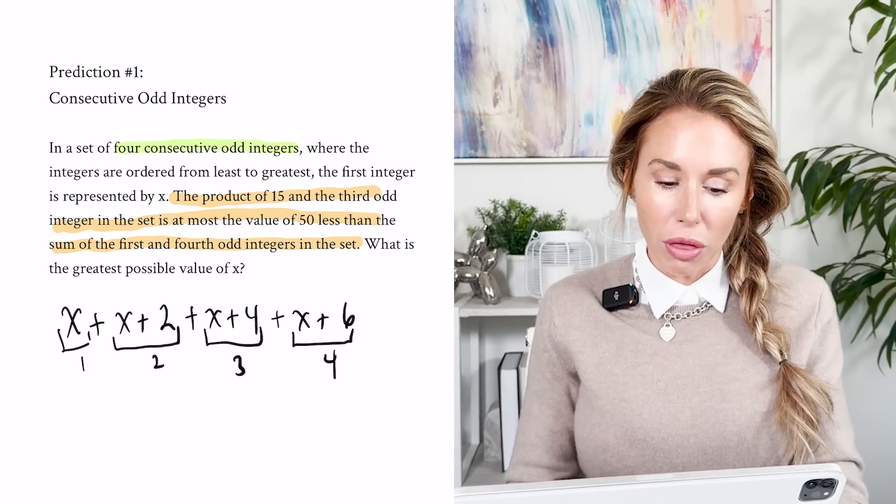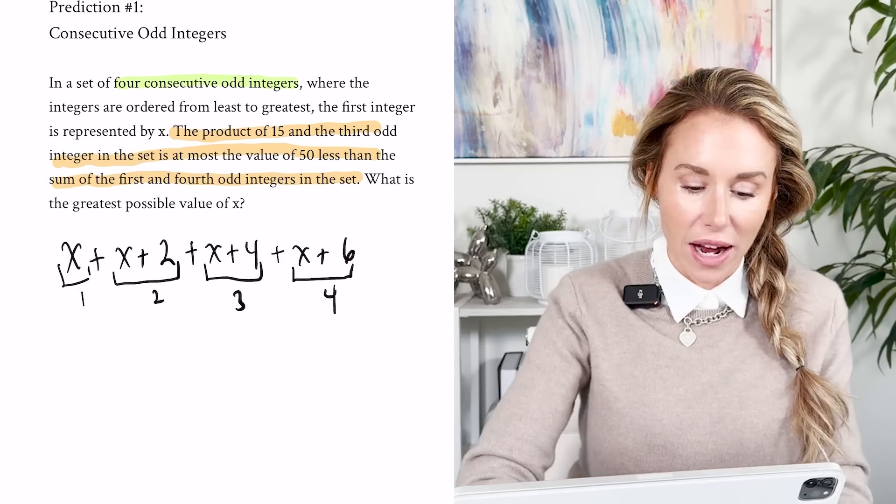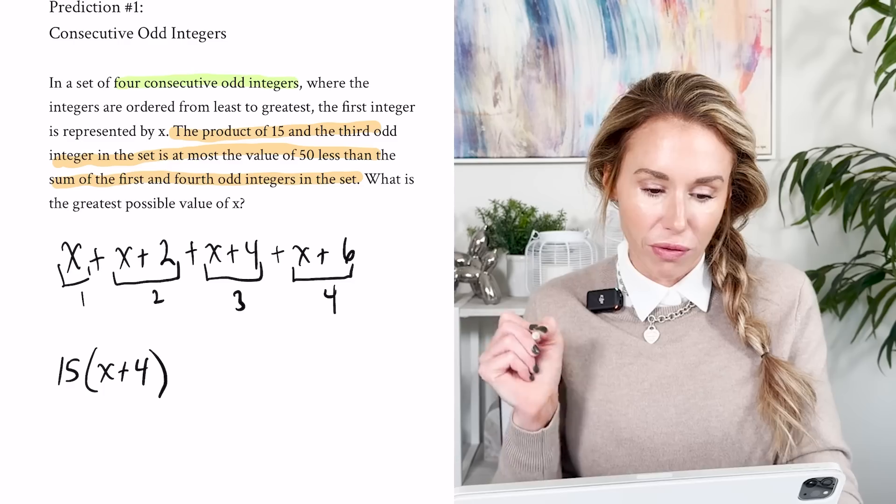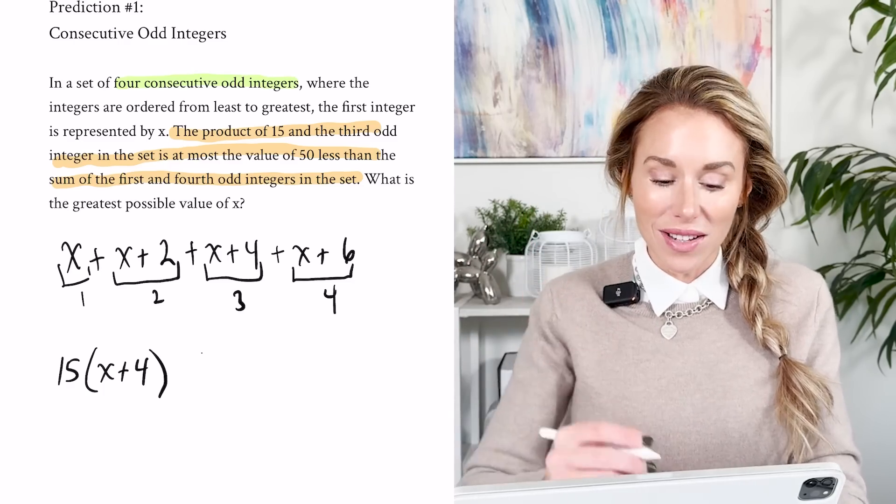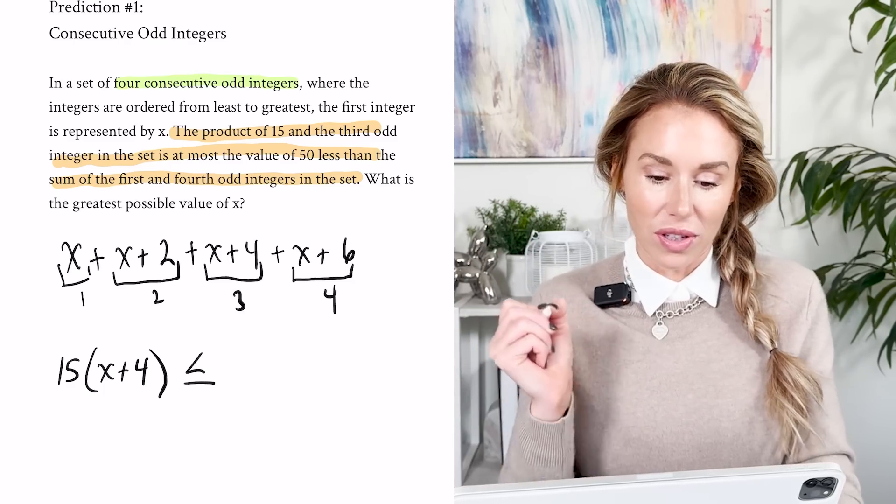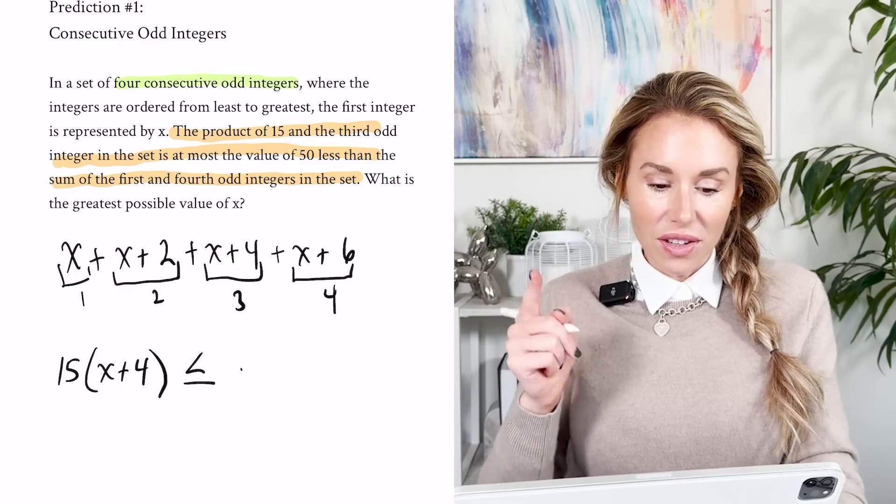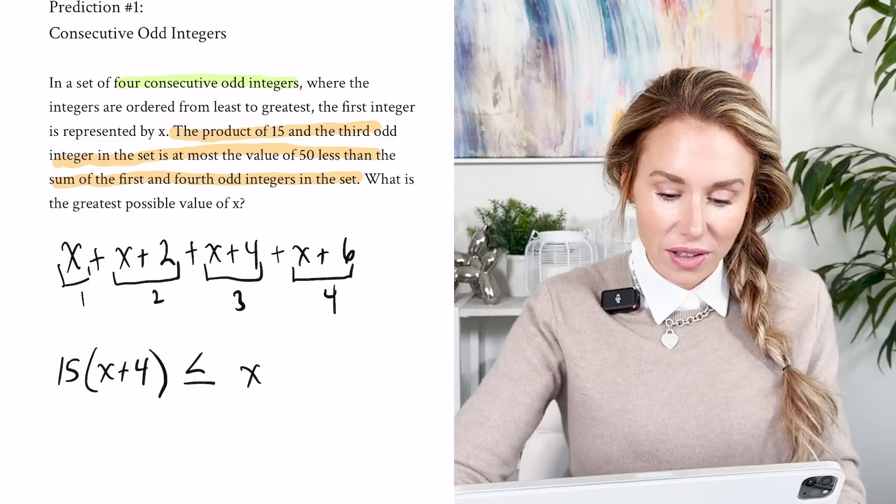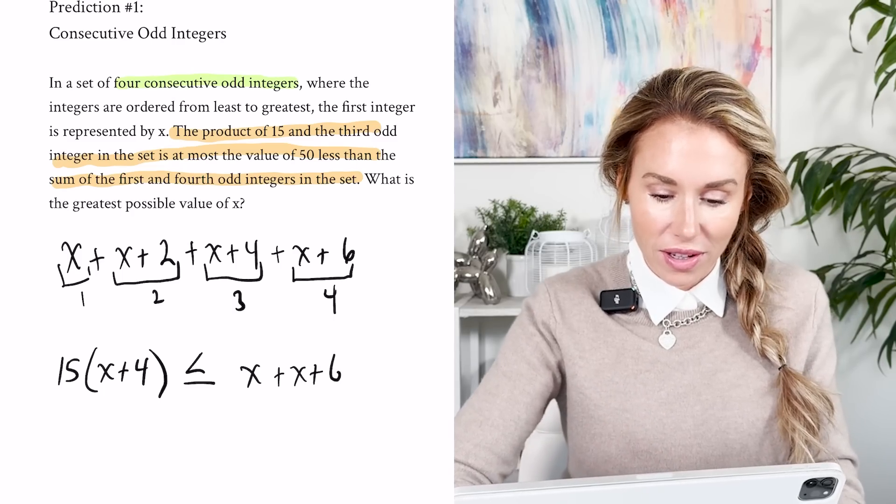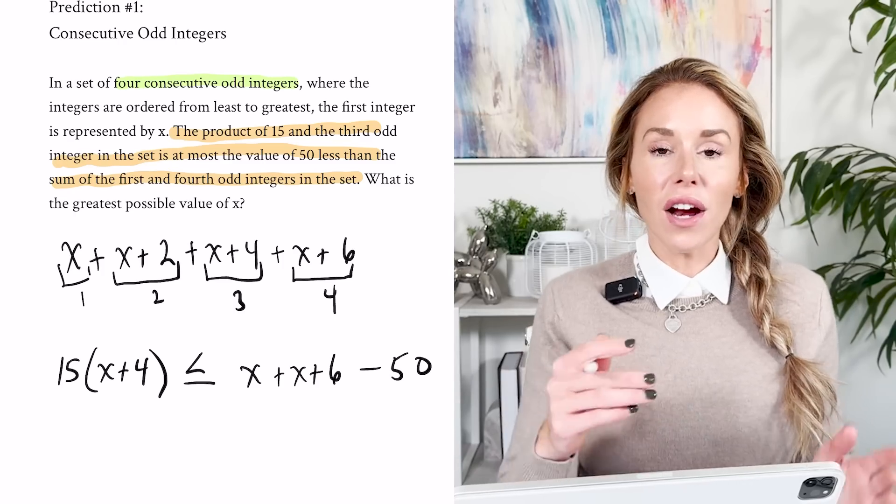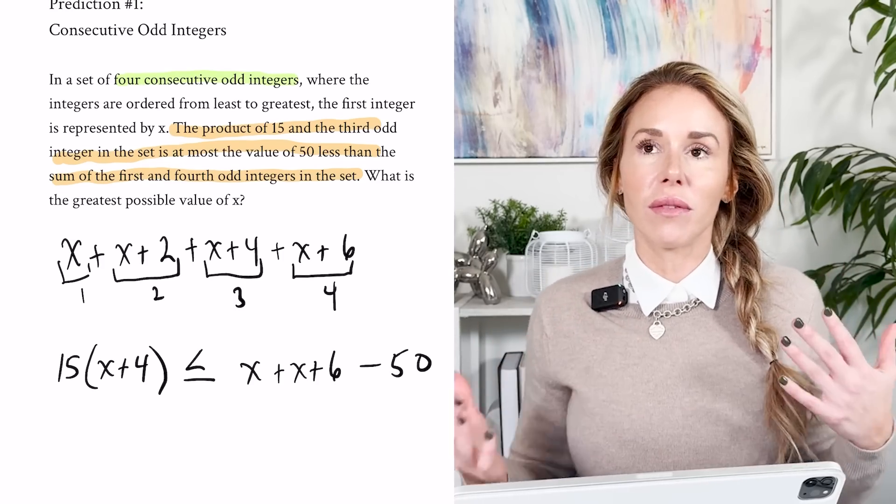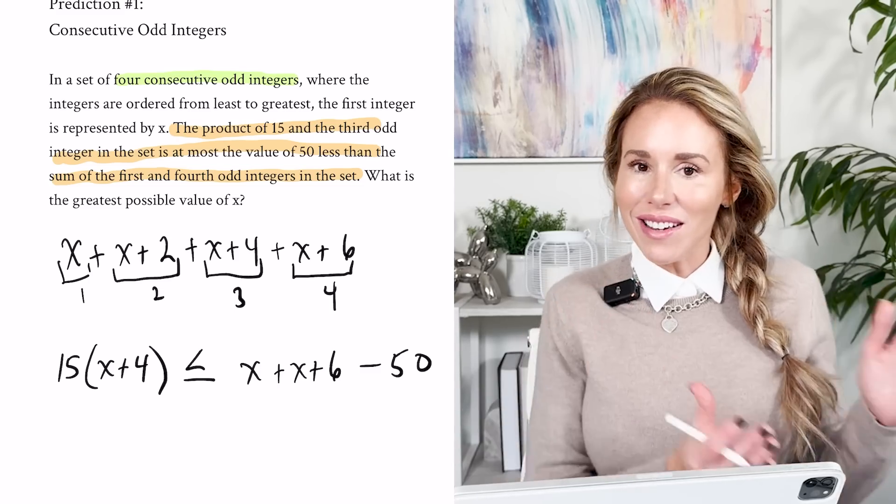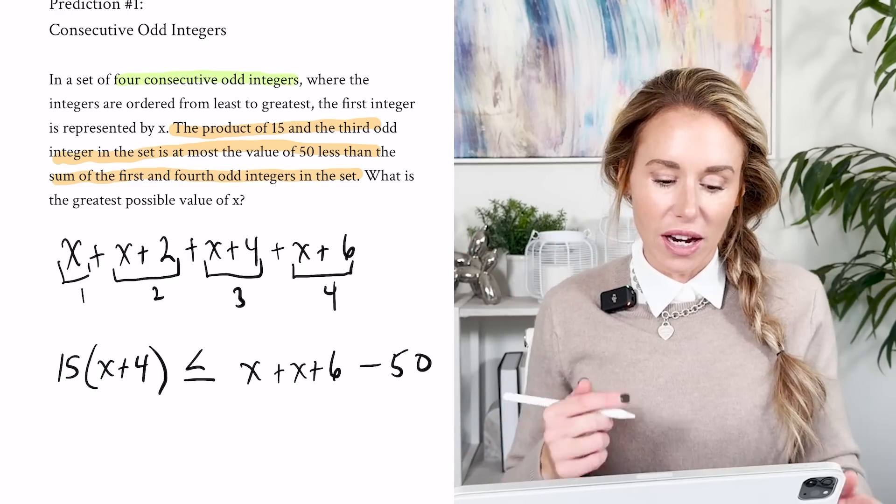Now what they're doing here is they're basically challenging you to take this English phrase and translate it into an equation. This is a skill that you need throughout the SAT math. So let's do that. It says the product of 15 and the third odd integer in the set. So 15, now the third one's x plus four. So 15 times x plus four is at most, so that means it's going to be less than or equal to the value of 50 less than the sum of the first and fourth odd integers in the set. So the first integer is x, the fourth is x plus six, and then it's going to be 50 less than that. Be careful. Students, when they see a less than statement, they like put the number in the front, but it's 50 less than all that. So you subtract it from the end. So be very careful with that.